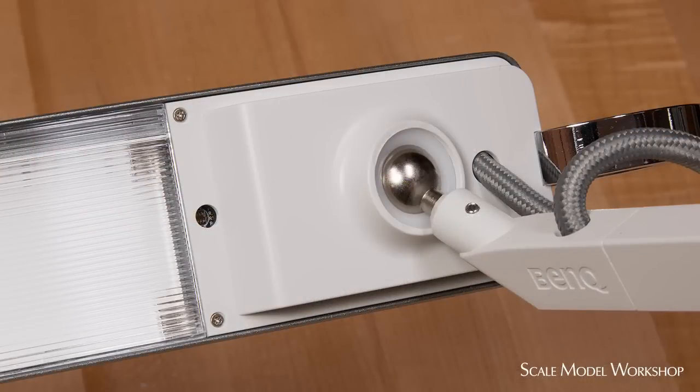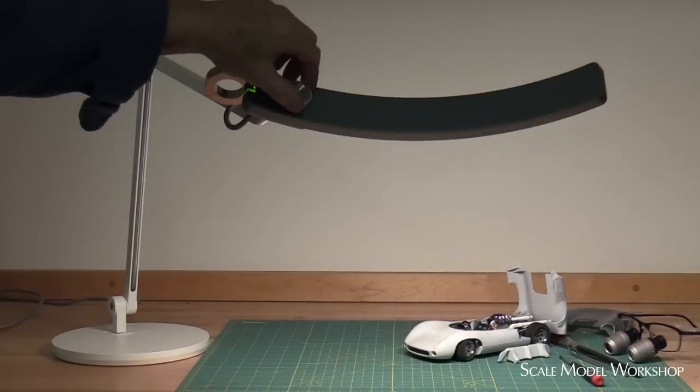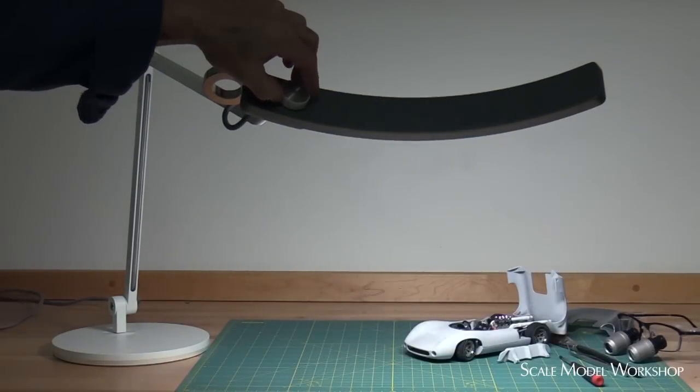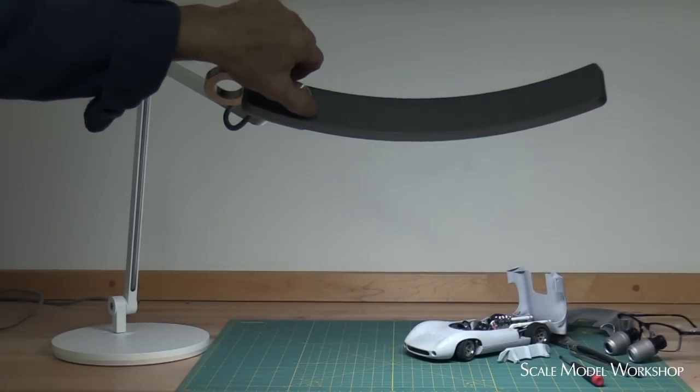Brightness in the automatic mode is controlled by a sensor that measures the ambient light. The brightness and color of the light can also be controlled manually with the knob on the top.